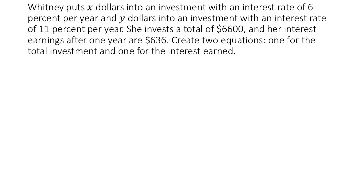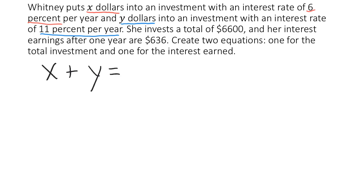Before we jump into making equations here, we need to get a handle on the quantities involved. We are told that x is the dollars invested at 6% per year, and y is the dollars invested at 11% per year. We're asked to create two equations involving these two variables. Starting with the total size of the investment, $6,600: if we take the amount in the first investment and add to it the amount in the second investment, that should equal $6,600. And there's our first equation.